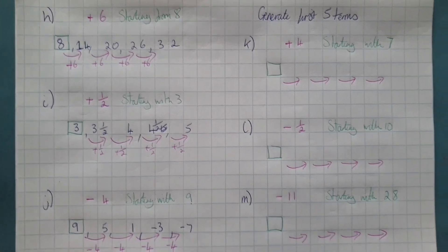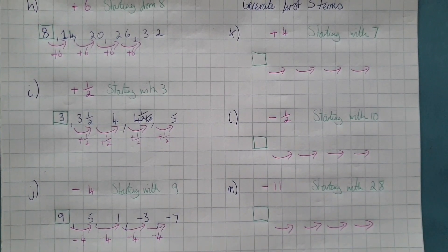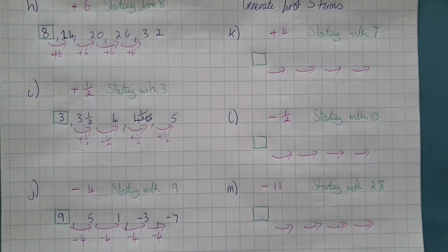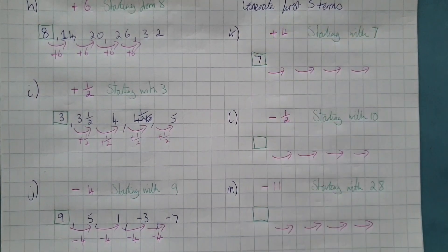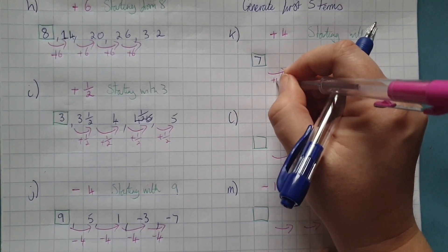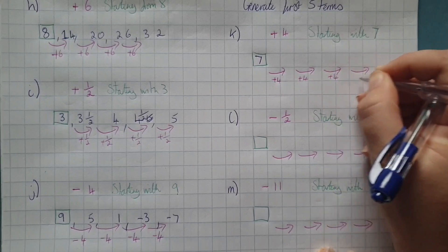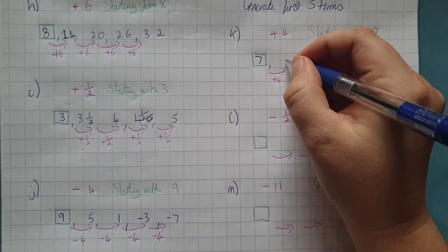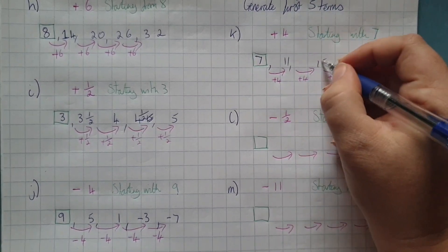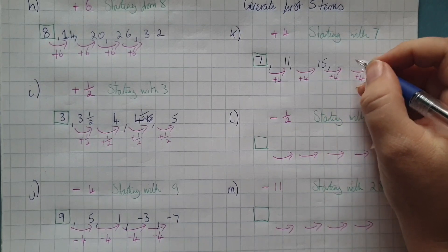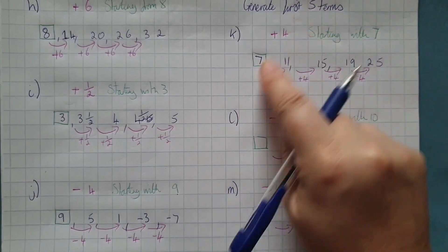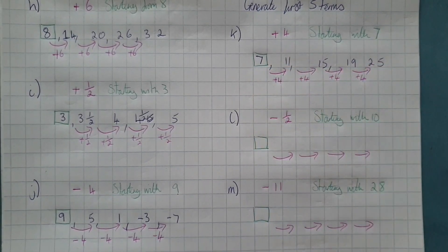As you can see, while you've been doing your work I've drawn the boxes in for ease. Working to the same principle: we know we're starting from seven, so seven goes into the starter position. We know we are adding four. Seven plus four is eleven, eleven plus four is fifteen, fifteen plus four is nineteen, nineteen plus four is twenty-three. We need five terms — one, two, three, four, five — job done.